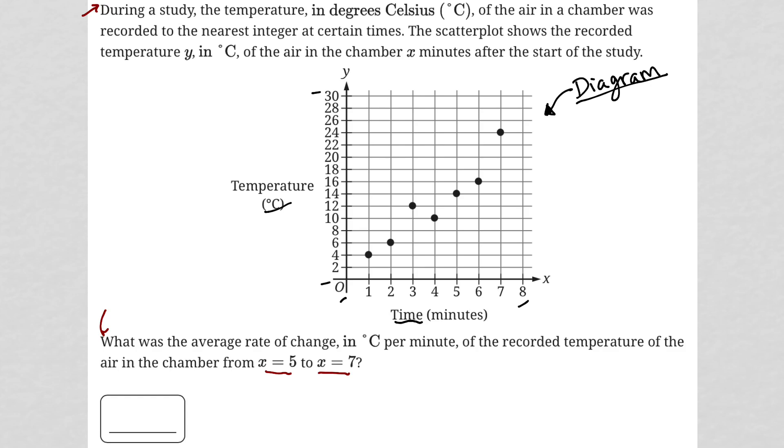One, the average rate of change is a statement that means slope, right? So that's the first thing you have to maybe make sure you're aware of, make sure you have written down in your notes. Average rate of change means slope.